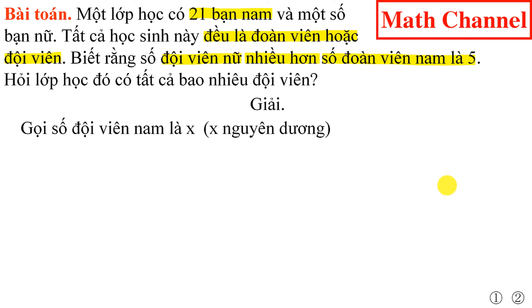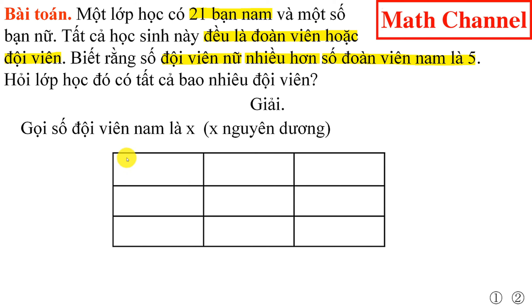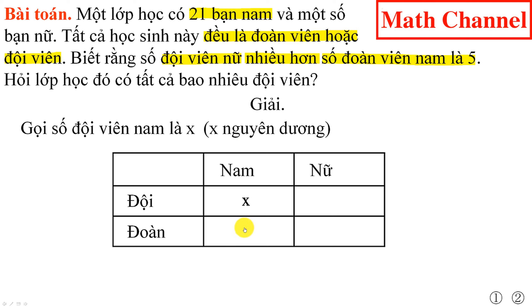Chúng ta có thể tóm tắt giữ kiện và yêu cầu của bài toán theo bảng sau. Chúng ta kẻ một cái bảng gồm có 3 dòng, 3 cột. Trong đó số đội viên nam chúng ta đặt là x. Vì số học sinh nam là 21, cho nên số đoàn viên nam sẽ là 21 trừ x. Từ đây chúng ta có thể tính được số đội viên nữ. Do đề bài cho số đội viên nữ nhiều hơn số đội viên nam là 5, như vậy số đội viên nữ ở đây sẽ là 21 trừ x, cộng 5.